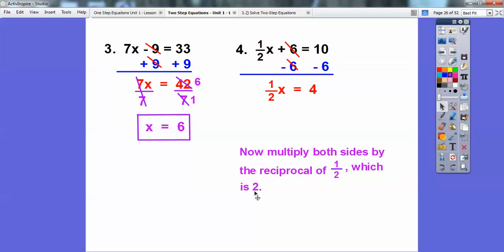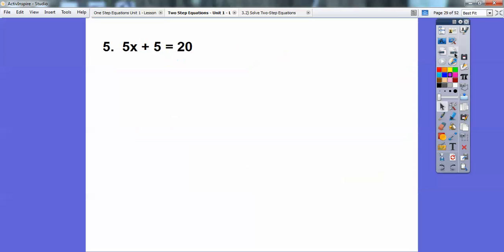And the reciprocal of 1 half is 2, or 2 over 1. So I'm going to put parentheses around this side and around this side, and then multiply both sides by 2. Now these 2's will cancel right here. And over here we have 4 times 2, which is 8. So x equals 8. All right, easy enough.